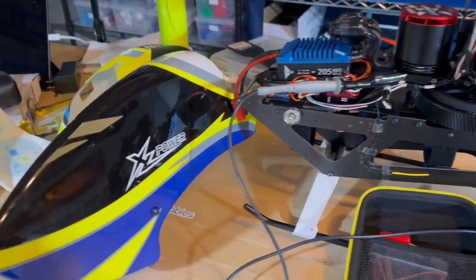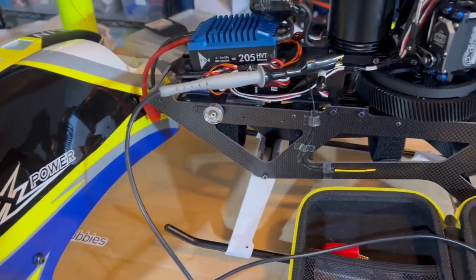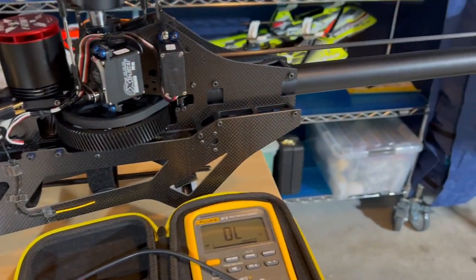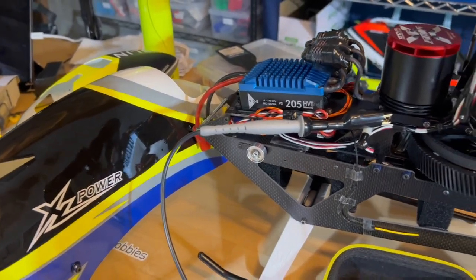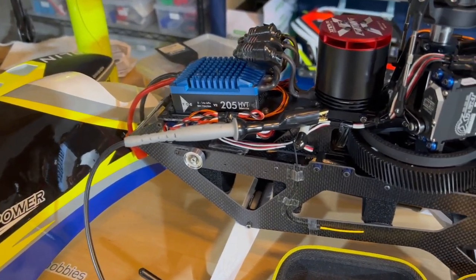There was a question in one of the forums about the static discharge from the belted tail on this XL Power Spectre 700 NME helicopter.